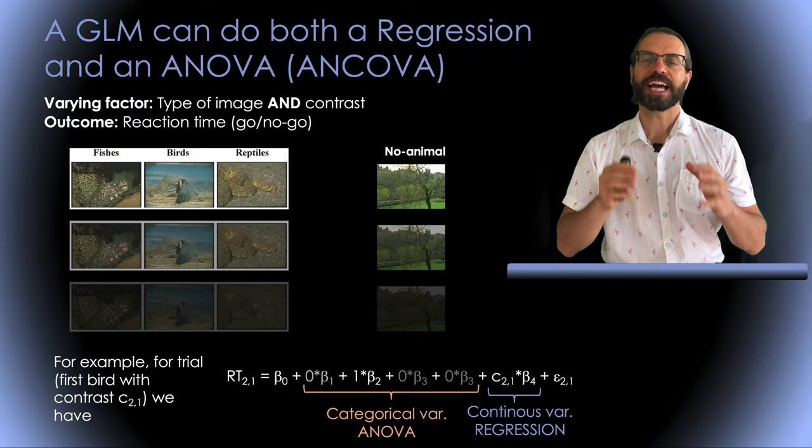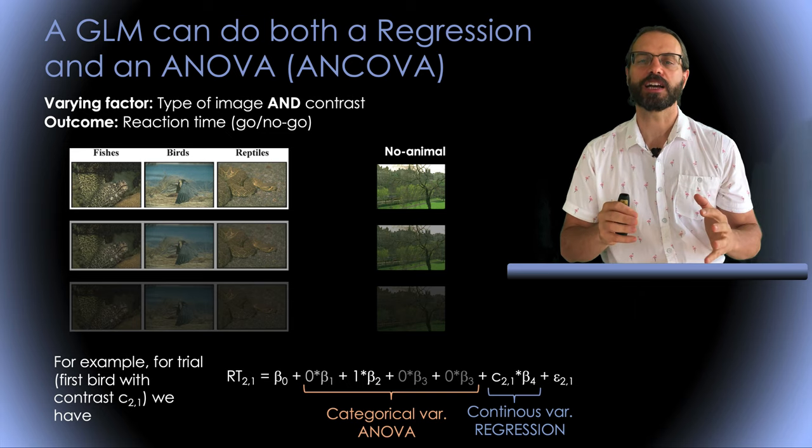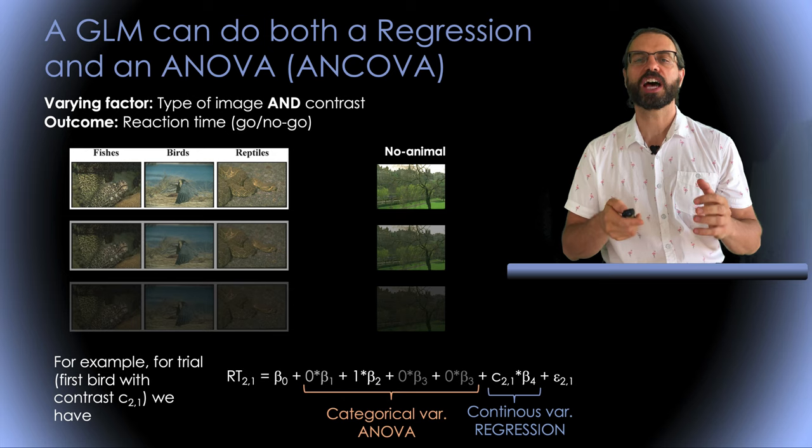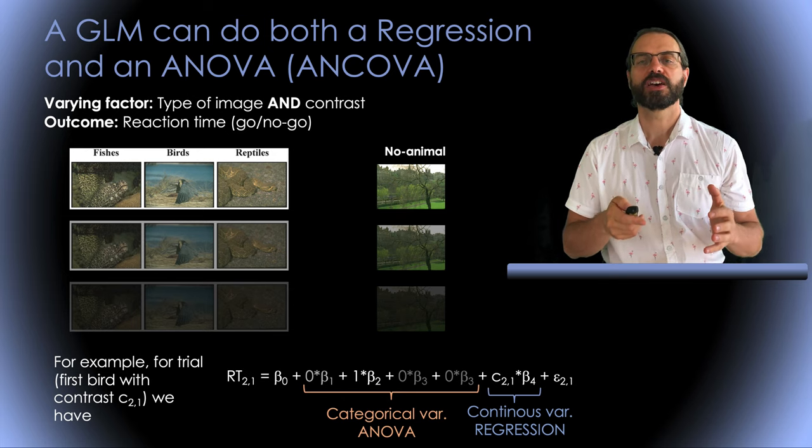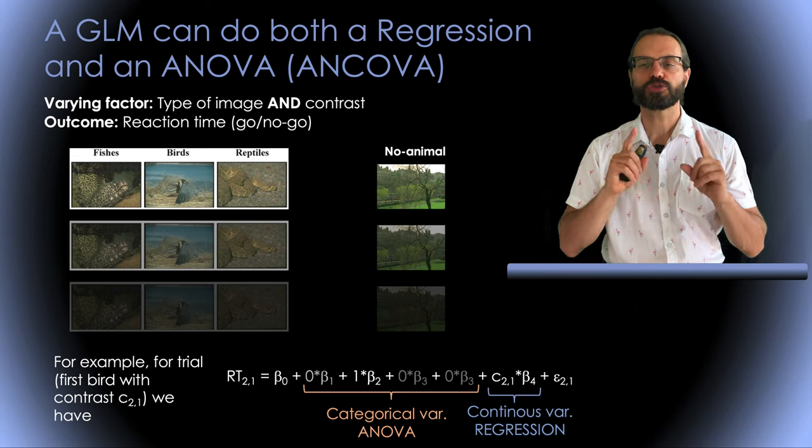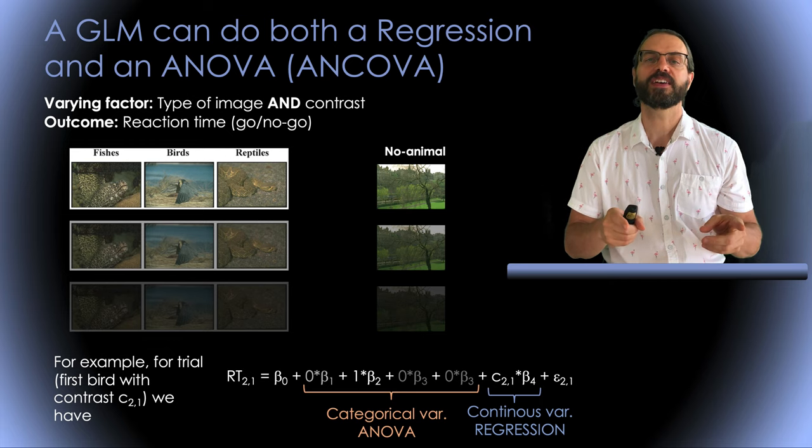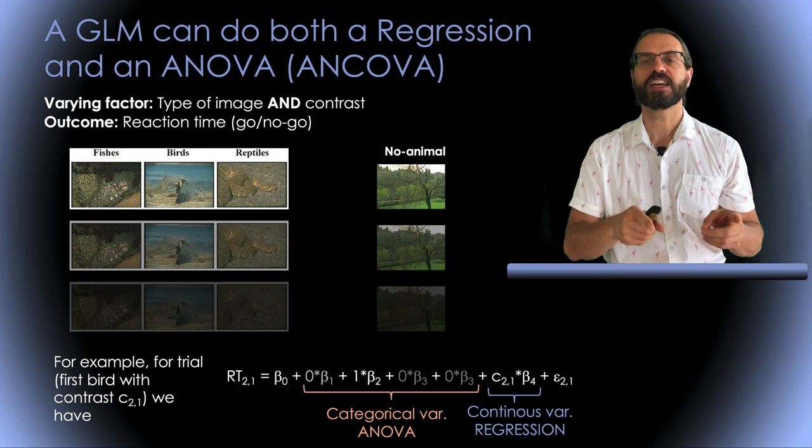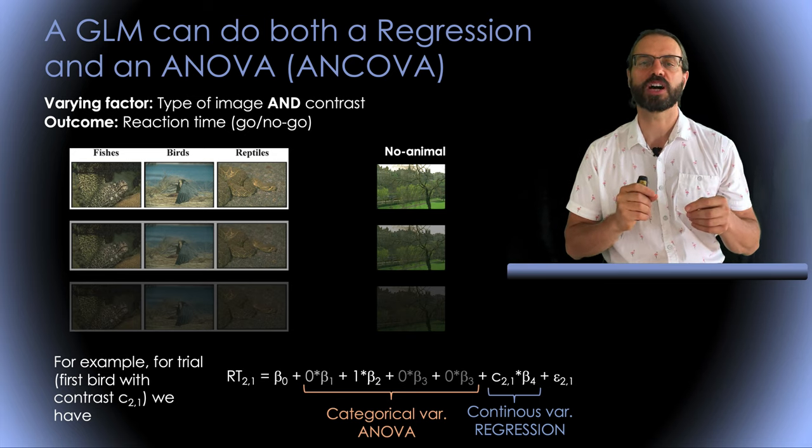Now a GLM can actually model both a regression and an ANOVA at the same time which is an ANCOVA. Still using the same example now we vary both the category of the target image and the contrast. Again we measure reaction time. For example for a trial that contains a bird at a given contrast we would have the beta parameters corresponding to the ANOVA plus the beta parameters for contrast.